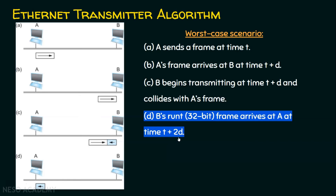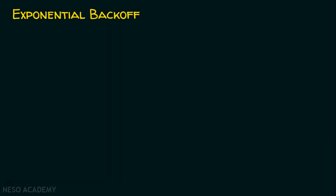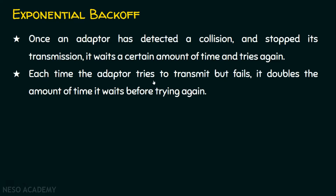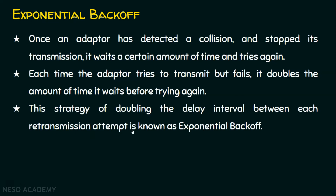Exponential backoff is the technique used by Ethernet to reduce the probability of collision. Once an adapter detects a collision and stops transmission, it waits a certain amount of time and tries again. Each time the adapter tries to transmit but fails, it doubles the wait time before trying again — for example, 1 second, then 2 seconds, then 4 seconds, then 8 seconds, and so on. This strategy of doubling the delay interval between each retransmission attempt is known as exponential backoff.